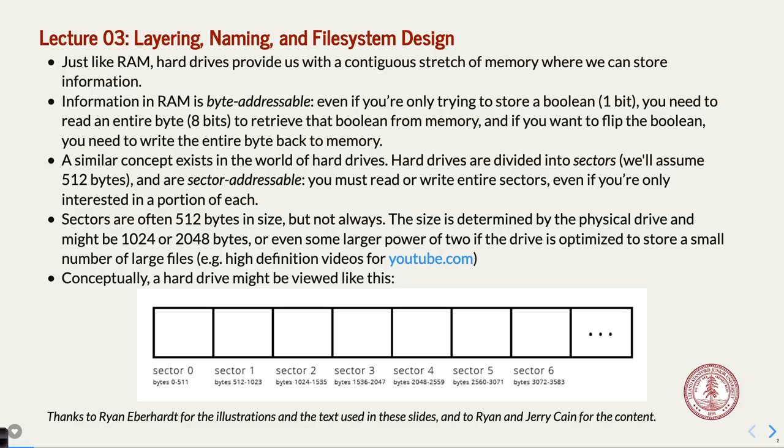Think of RAM as one big long byte-addressable array. When I say byte-addressable, it means you can adjust one byte of memory at a time — you can't do one bit at a time. You can do bit masking, but you're always working on at least one byte at a time. If you want to read something from memory, you're going to read eight bits out of it, and if you write, you write eight bits to it. That's how RAM works.